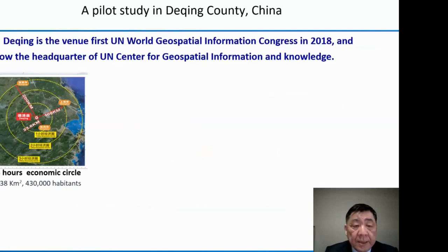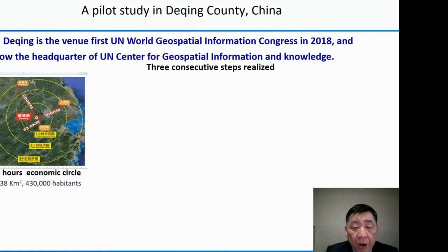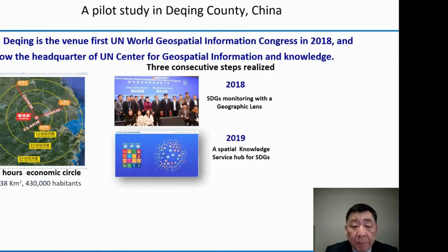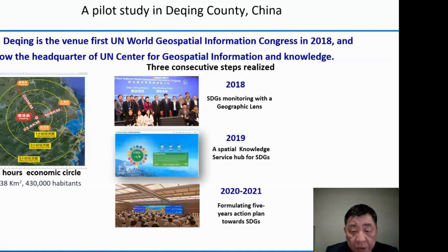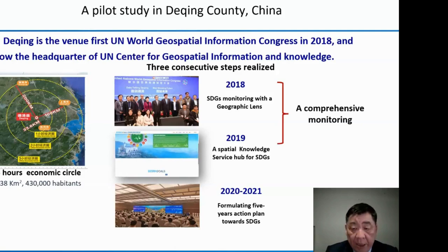With this background, we selected a small county in China — Beijing County — to organize pilot studies. It is in the south-east part of China, not far from Hangzhou and Shanghai. It was the venue of the first United Nations World Geospatial Congress in 2018, and now the headquarters of the United Nations Center for Geospatial Information and Knowledge. We realized three consecutive steps: first, SDG monitoring with geospatial information; second, converting the monitoring results into a special monitoring service hub in 2018-2019; and third, populating a five-year action plan towards SDGs using those results.